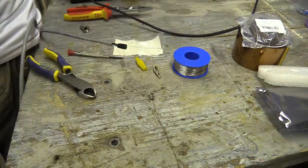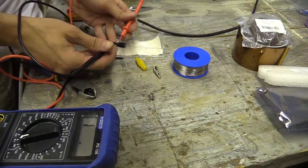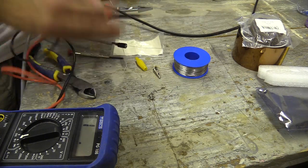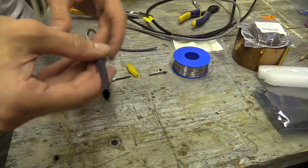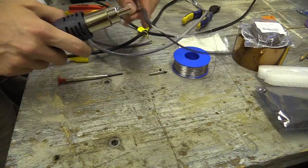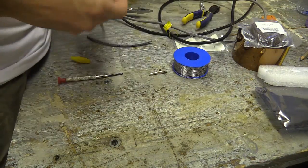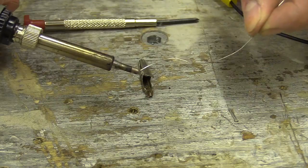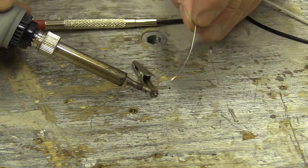I use heat shrink to neaten the joins and check that there's no shorts using the voltmeter. I soldered a crocodile clip to one wire end and crimped a ring terminal to the other.